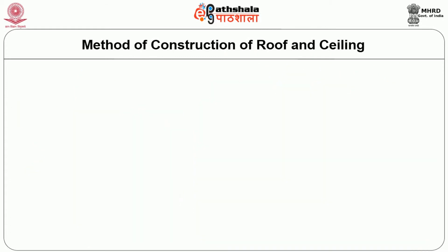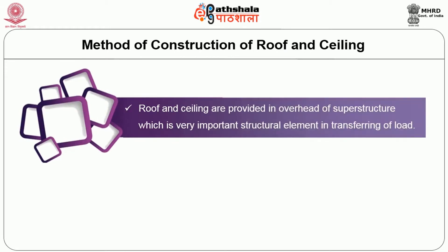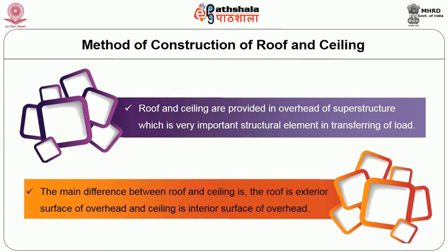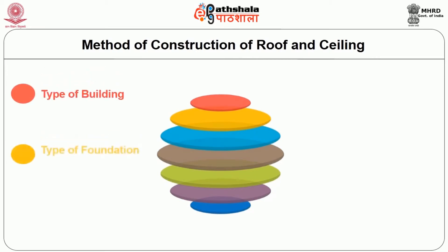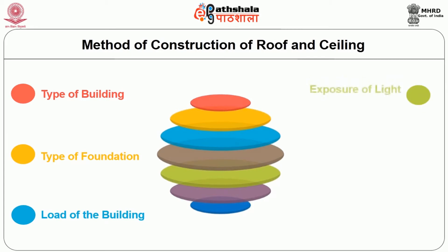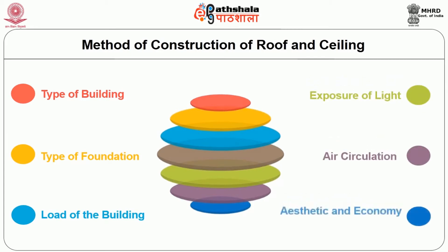Next we will see methods of construction of roof and ceiling. Roof and ceiling are provided overhead in the superstructure and are very important structural elements in the transferring of load. The main difference between roof and ceiling is that the roof is the exterior surface of the overhead structure, and the ceiling is the interior surface. For example, a three-story building has only one roof but three ceilings. The selection of a roof for a building depends on many factors: type of building, type of foundation, load of the building, exposure to light, air circulation, aesthetics, and economy.